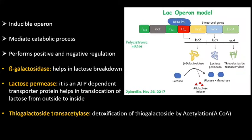The lactose operon is an inducible operon. It is inducible because it is usually off – in the absence of an inducer, the operator is blocked by a repressor molecule. It helps in mediating catabolic processes, specifically the degradation of the milk protein lactose. It can perform both positive and negative control. In negative control, it involves turning off the operon in the presence of a repressor. It can be either repressible or inducible, and the operon is made up of control elements.